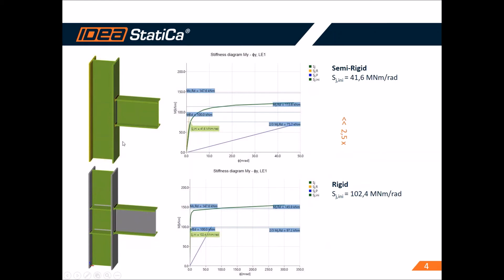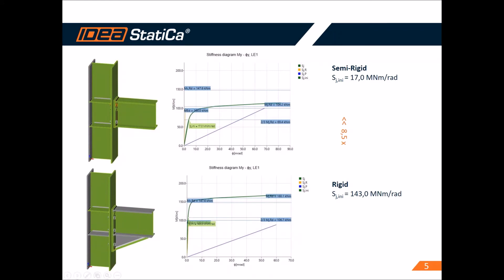We can compare typical connections: by adding only stiffening ribs — stiffeners — we increase the stiffness of this connection two and a half times, moving it from semi-rigid to rigid. In another comparison, with an end plate connection with six bolts and stiffeners, if we add a haunch with a flange, you can see the stiffness is almost 10 times higher and the connection becomes truly rigid. This was a concluding example for the webinar.